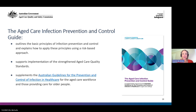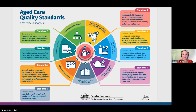The Aged Care Infection Prevention and Control Guide outlines the principles and supports the implementation of the strengthened aged care quality standards, so we really need to understand this guide. The current standards also apply — it's important to understand this applies now, not just for the strengthened standards.